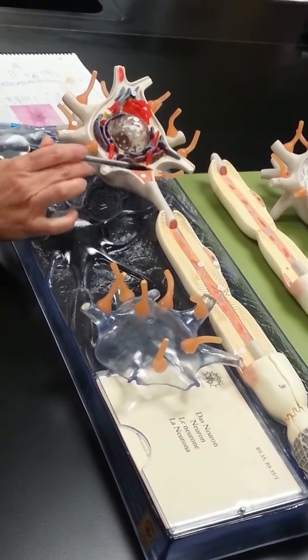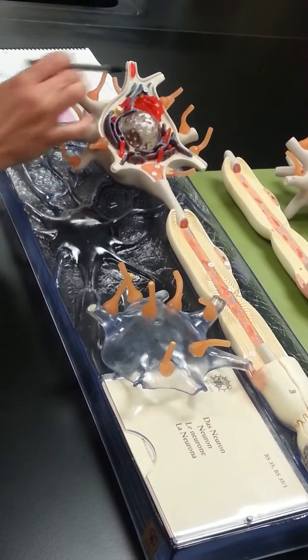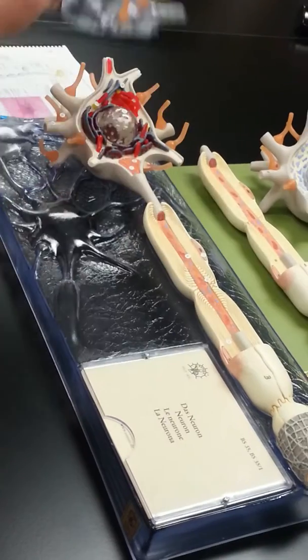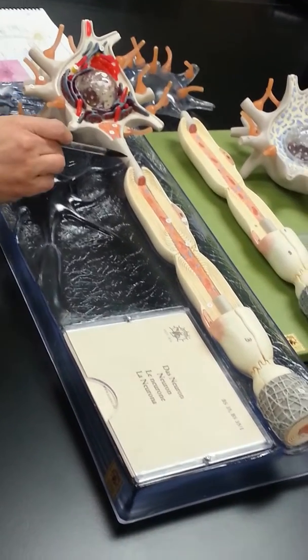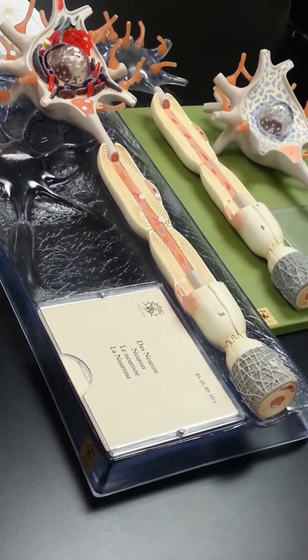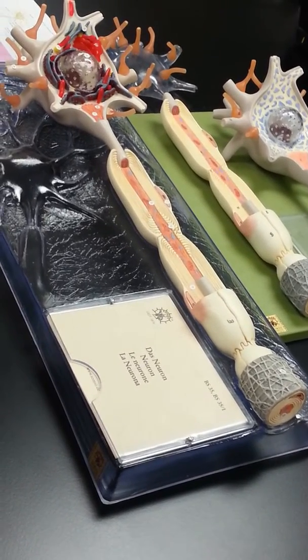So we've got the axon hillock, the initial segment. And I think of the cell body, that's everything that we need to name there. When it comes down to the axon itself, the axon is going to be a single, very, very long process in these types of multipolar motor neurons.